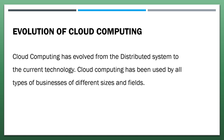Let's learn about the evolution of cloud computing. Cloud computing is all about renting computing services. This idea first came in the 1950s. In making cloud computing what it is today, five technologies played a vital role. These are distributed systems and its peripherals, virtualization, Web 2.0, service orientation, and utility computing. Cloud computing has evolved from the distributed system to the current technology, and has been used by all types of businesses of different sizes and fields.